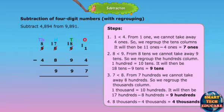8 thousands minus 4 thousands is equal to 4 thousands. 9,891 minus 4,894 is equal to 4,997.